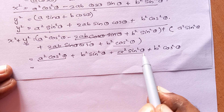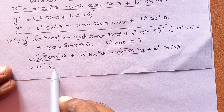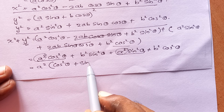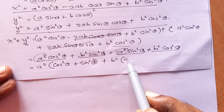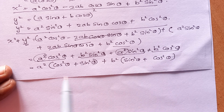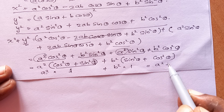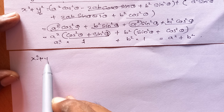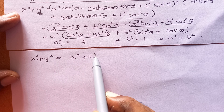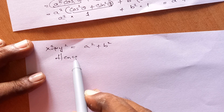Now if you rearrange, a square is a common term, giving a square into bracket cos square theta plus sin square theta, and b square is common in bracket sin square theta plus cos square theta. Since cos square theta plus sin square theta equals 1, we get a square into 1 plus b square into 1, which equals a square plus b square. So x square plus y square equals a square plus b square. That is what we needed to prove. Hence proved.